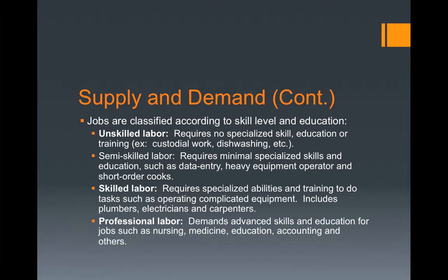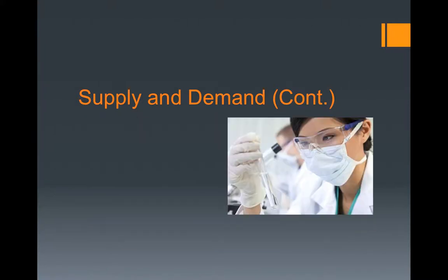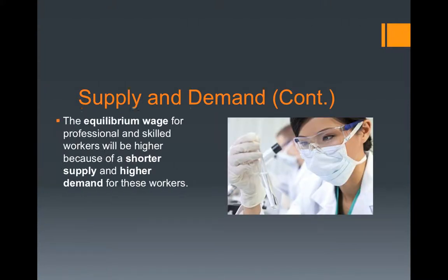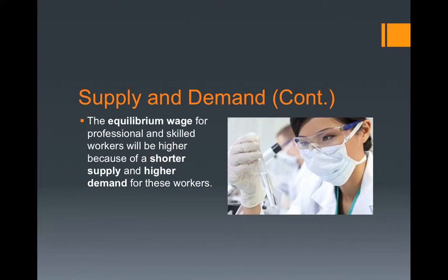And there is professional labor, which demands advanced skills and education for jobs such as nursing, medicine, education, accounting, and many others. The equilibrium wage for professional and skilled workers will be higher because of a shorter supply and higher demand for these workers.